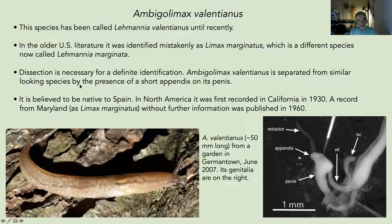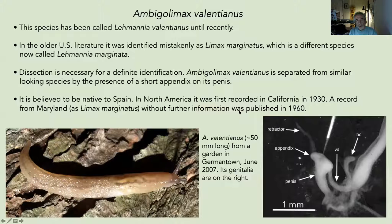Dissection is necessary to identify Ambigolimax valentianus. I found one in my backyard, about 50 millimeters long, and dissected it — the penis has a distinctive protuberance called an appendix that identifies this species. Its first record was from California dating to 1930, and there is a Maryland record published in 1960, though no specific location was given. They're not very common but they are out there.